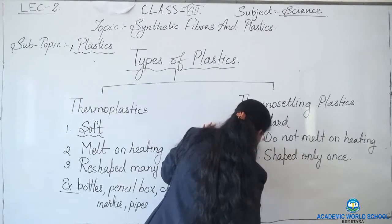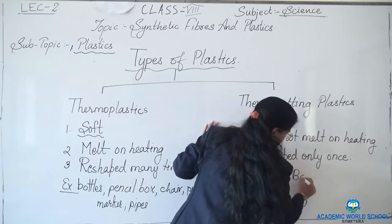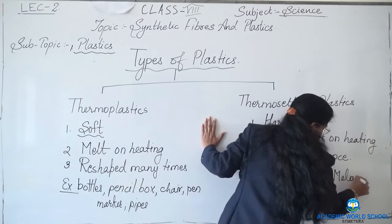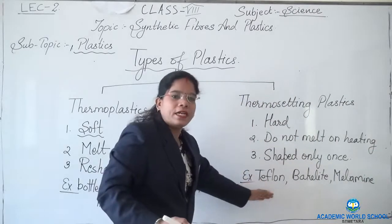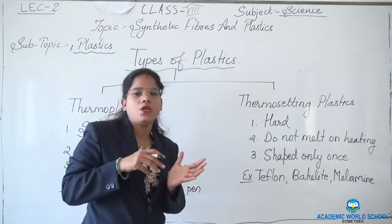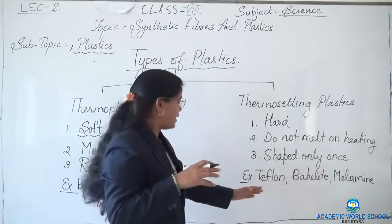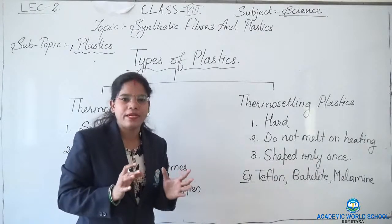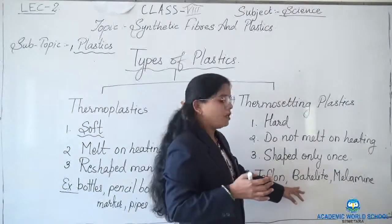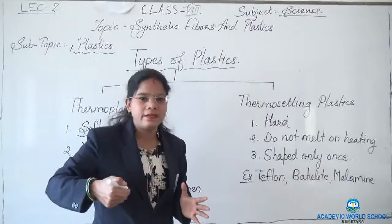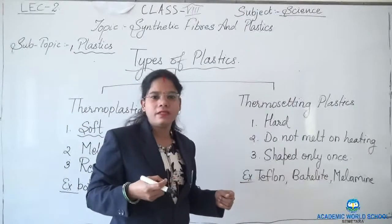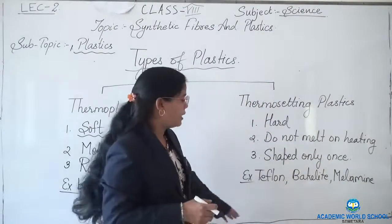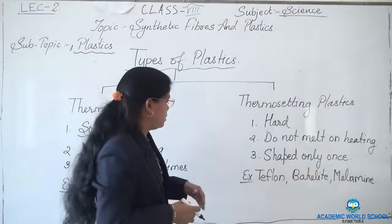Examples of thermosetting plastics are teflon, bakelite, and melamine. Teflon is a coating done on non-stick cookwares — the outer coating is actually teflon and it never melts, so we can cook our food easily. Bakelite is used for the handles of non-stick cookwares and pressure cookers — those black handles are made up of bakelite. Melamine is used for making electric switches and plugs. These can never be melted on heating.